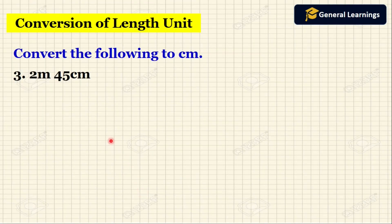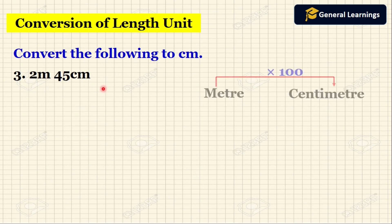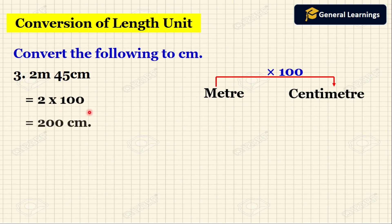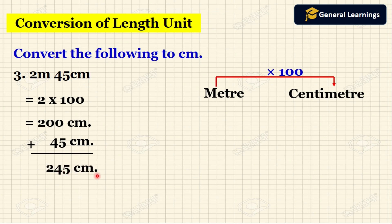Now we will see another example. Here they have given 2 meters 45 centimeters. Now we are going to convert this to centimeters. They have given 2 meters plus 45 centimeters. For that, first we need to convert the meters to centimeters by multiplying by 100. So 2 into 100 we get 200 centimeters. Then we add the 45 centimeters given in the question: 200 plus 45 gives us 245 centimeters. So when converting 2 meters 45 centimeters we get 245 centimeters.